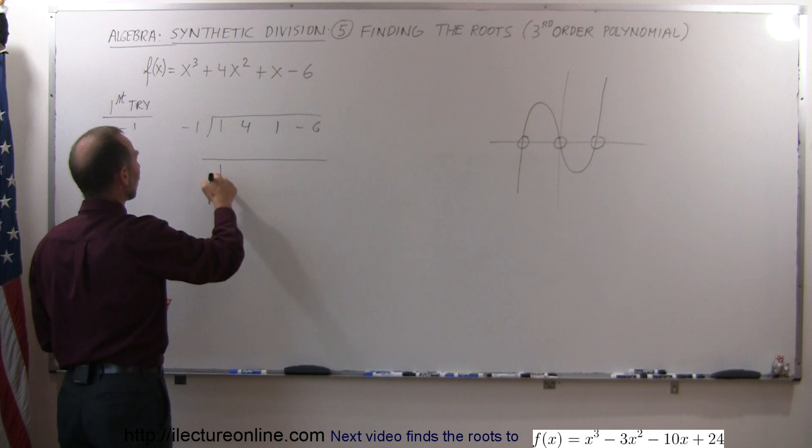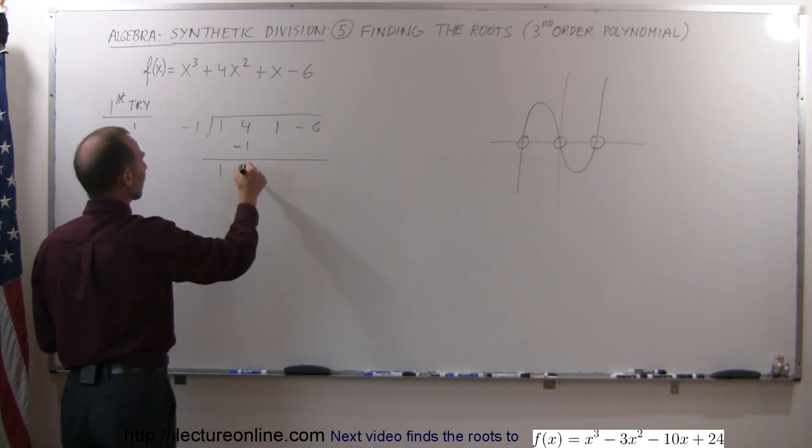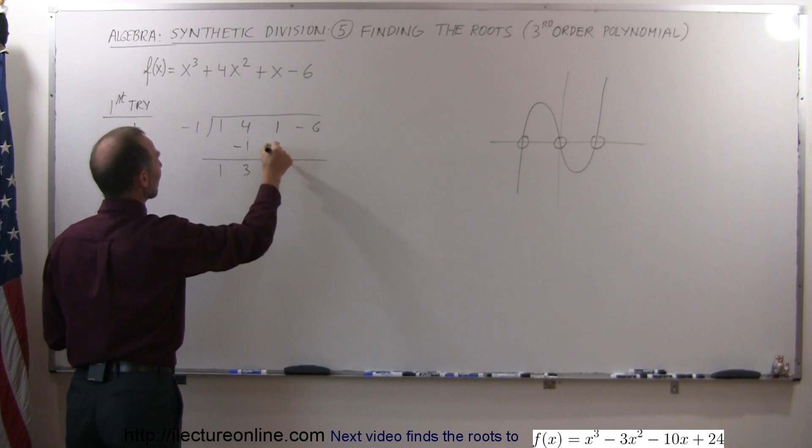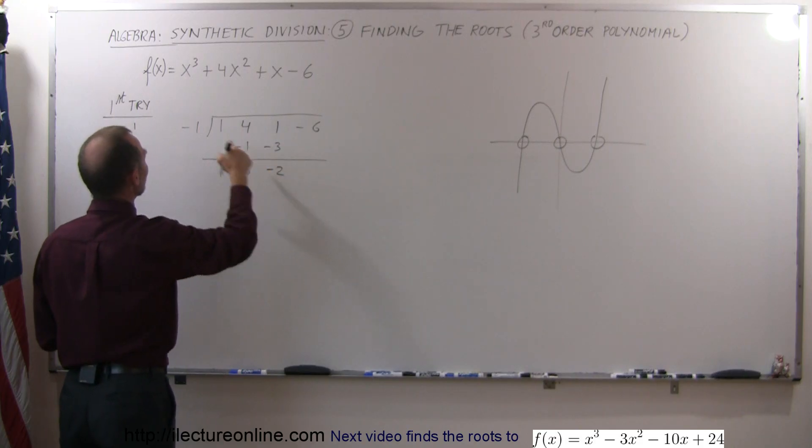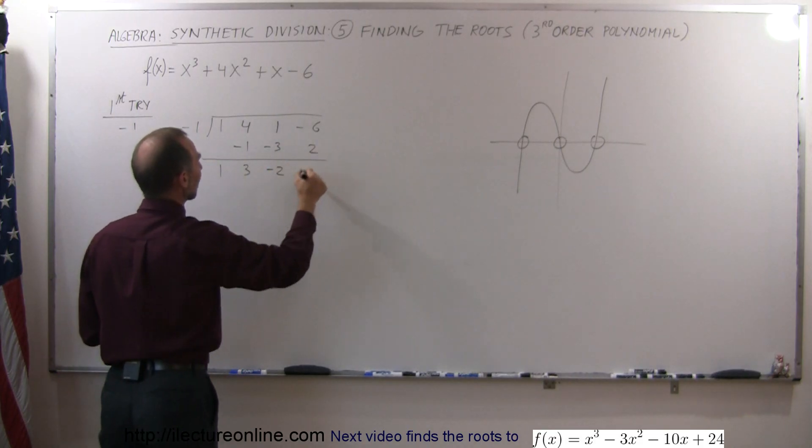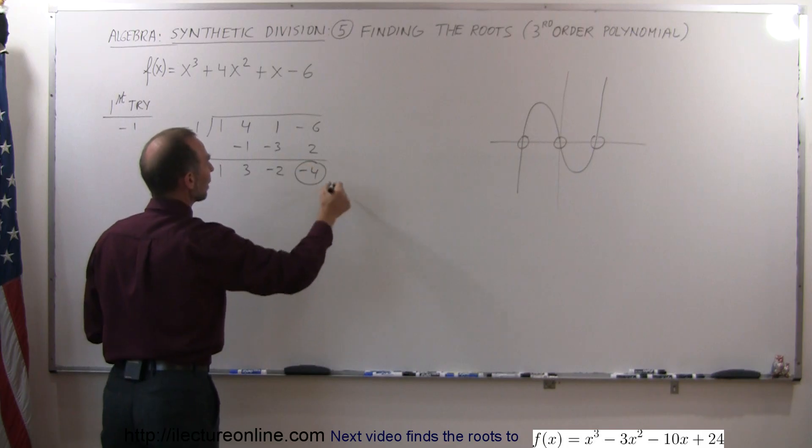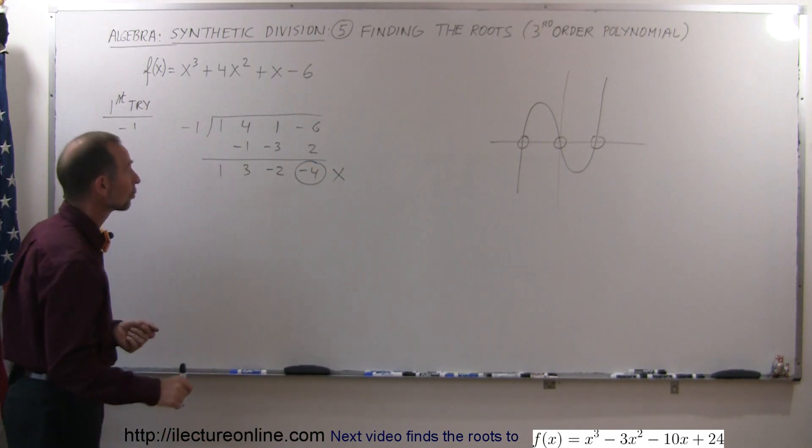We drop the 1 down. 1 times the negative 1 is negative 1. Add it together, we get 3. 3 times negative 1 is negative 3. Add them together, you get negative 2. Negative 2 times the negative 1 is 2. Add them together, you get negative 4. And you can see, it's not 0, so that was not one of the roots.